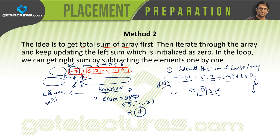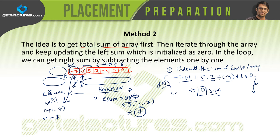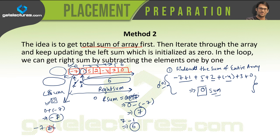When i points to the next location, we add the previous value to left sum: 0 plus minus 7 gives left sum = minus 7. We also subtract the new element from the right sum: 7 minus 1 = 6. So the right sum from here onward is 6, and the left sum is minus 7. Since minus 7 is not equal to 6, we increment i again.